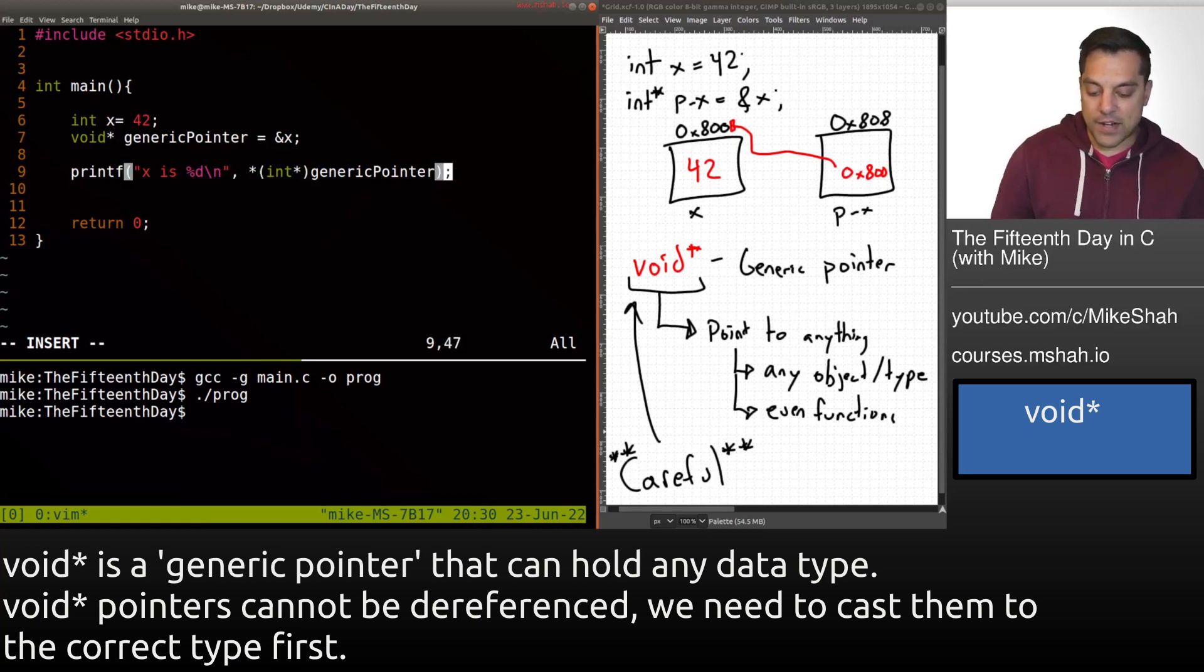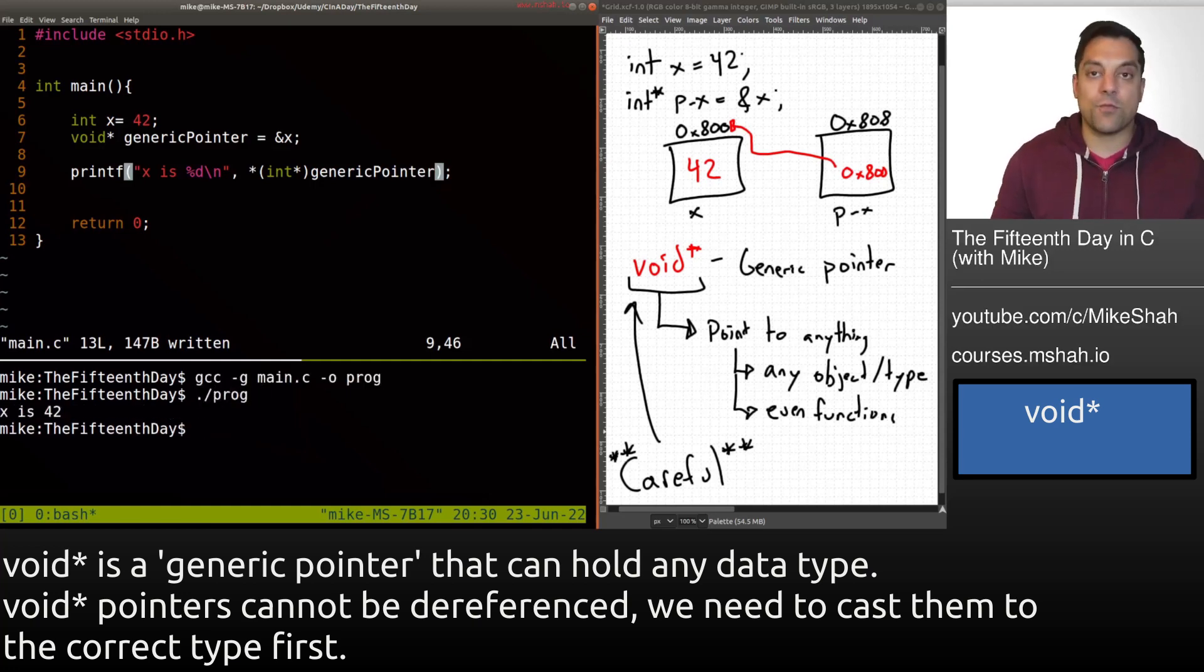And then now we can actually run our program. So let's go ahead and give this a try. And if I run this, we will see x is 42. So that's pretty cool. And again, this is powerful, because I can point to any particular data type that I'd like. And this allows flexibility, depending on if you have a very dynamic system and just need to point to things. So some areas where you might want to use these types of things, again, are in event driven programming, and so on.